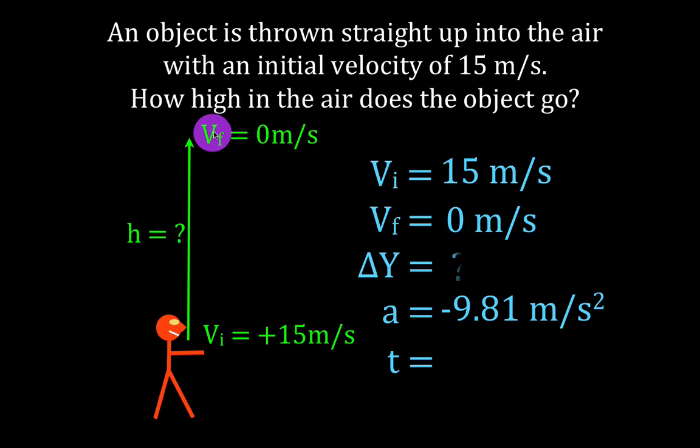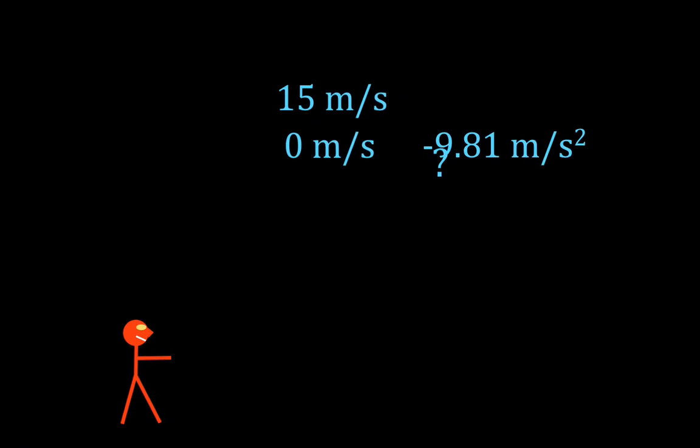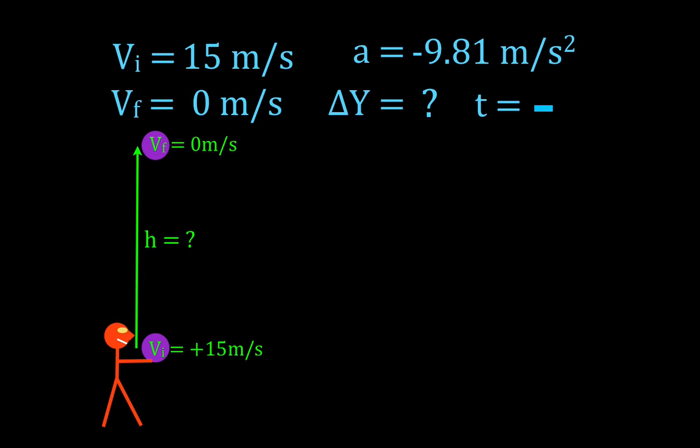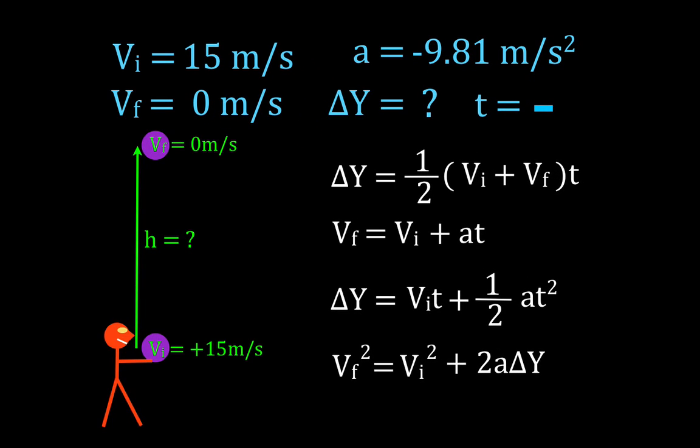And we're looking for the height or delta y. And we're not going to use the time. We're not given the time. So you can see, once again, we know three things. We're asked to solve a fourth. So now we can get out our kinematic equations and we can look for the correct equation.